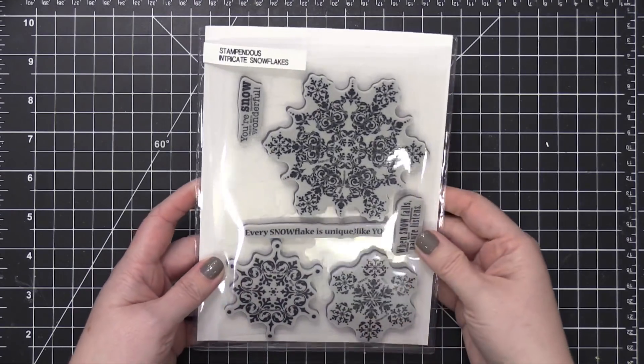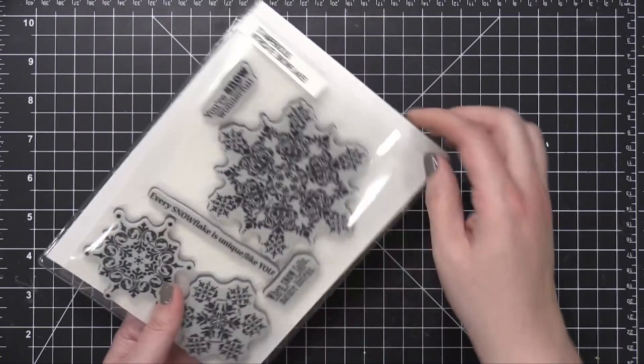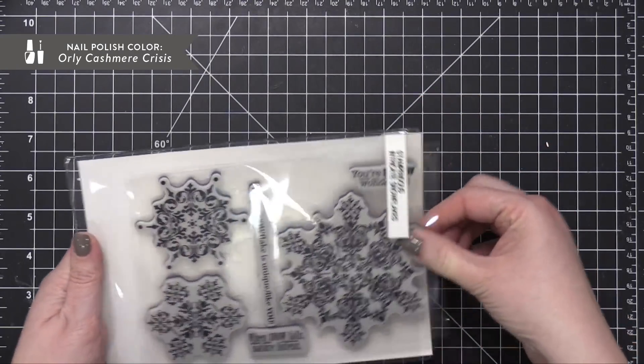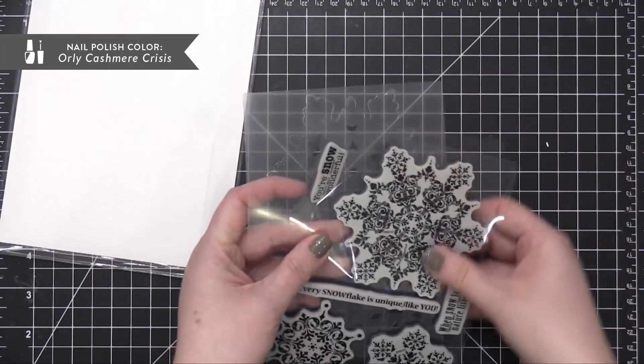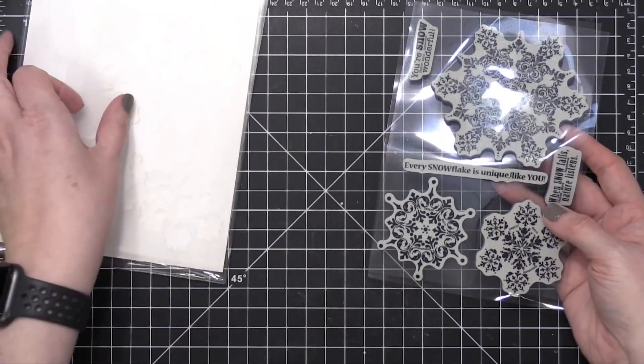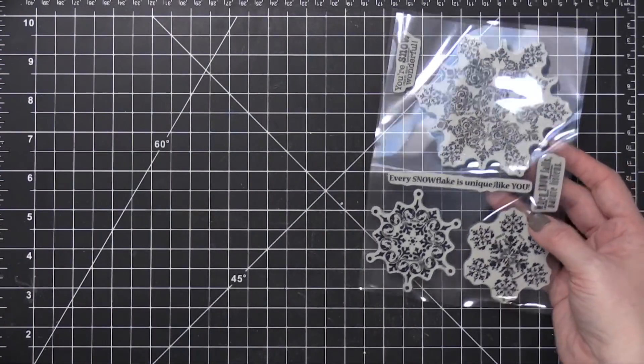The snowflakes I'm using today are from Stampendous. This is their intricate snowflake stamp set and it actually comes with some stencils as well that coordinate with these large snowflake images. I'm not going to be using the stencils today so I'll set those aside but I did want to let you know that they come with the stamp set.